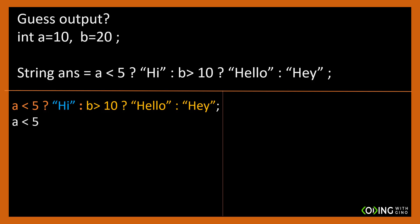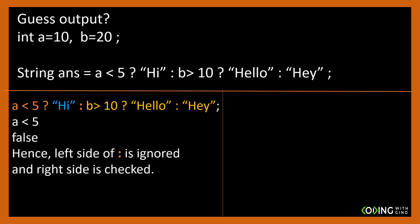Is a less than 5? a is 10. Hence, a less than 5 gives false. So the left side of the colon is ignored and the right side will be checked.